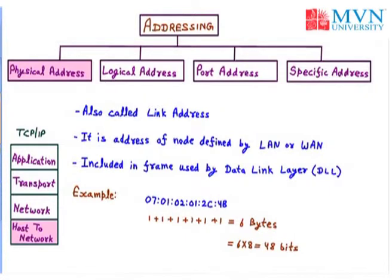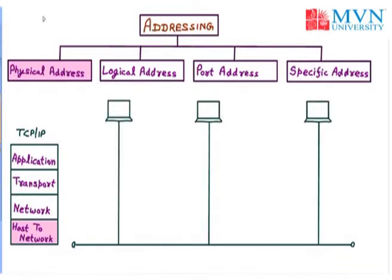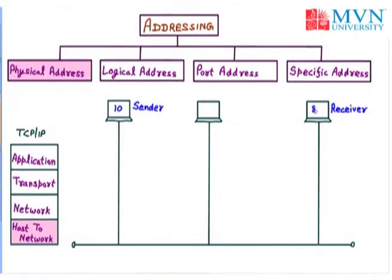The physical address works on the host-to-network layer of the TCP/IP model, so we skip the application, transport, and network layers — we only consider the host-to-network layer or the data link layer. Now let us draw the diagram. Here we have a bus topology with three systems. In the bus topology, the first system is the sender, the last system is the receiver, and every system has its own physical address. The sender has physical address 10, the receiver has physical address 87, and the middle computer has physical address 28.